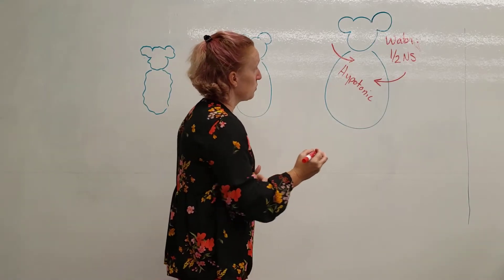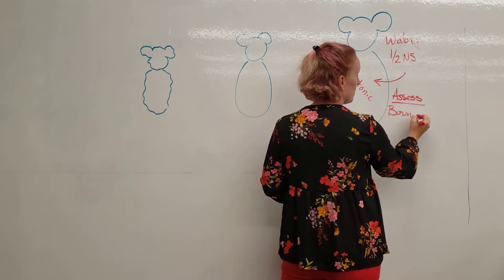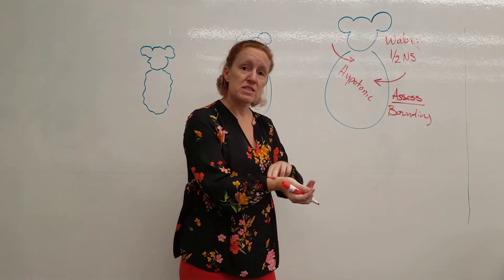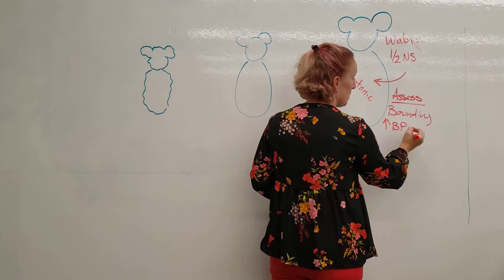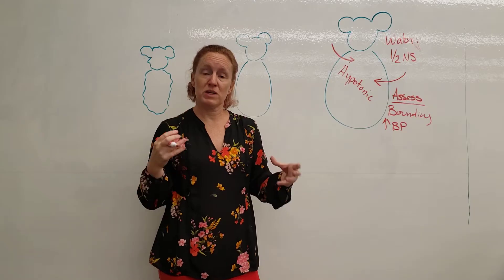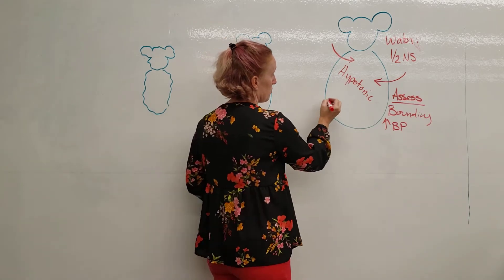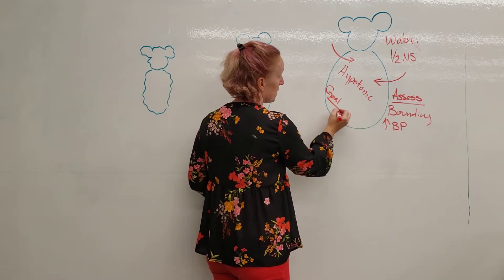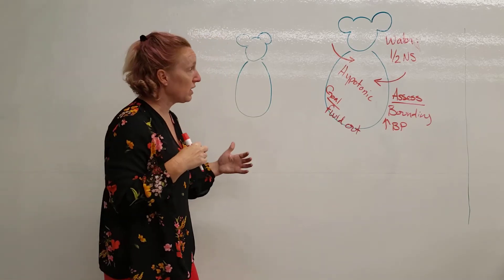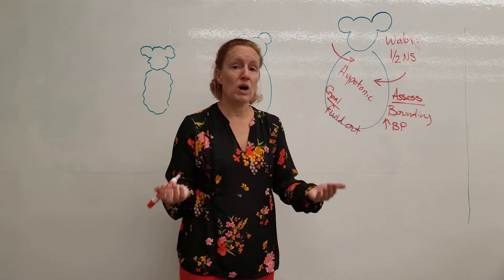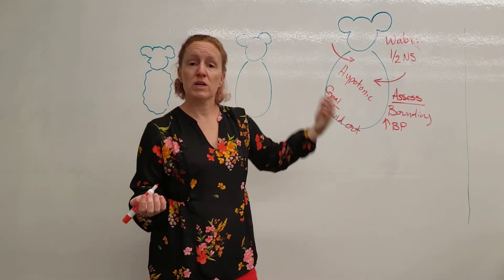When assessing this patient, we're going to look for a bounding pulse — that means fluid is in the vascular space and there's too much. Blood pressure may be elevated, showing there's too much volume in that space. All our goals are going to be to get fluid out — we want to remove that fluid so we can return to a happy, healthy cell. We have to figure out why there's fluid in there in the first place: was it too much hypotonic solution, or is it a disease process?